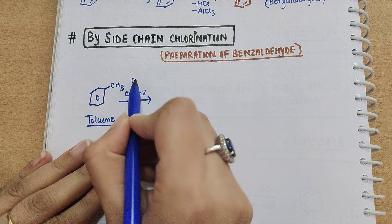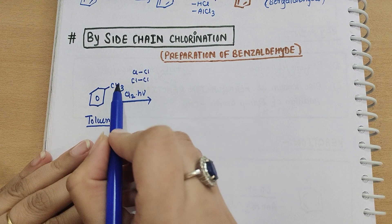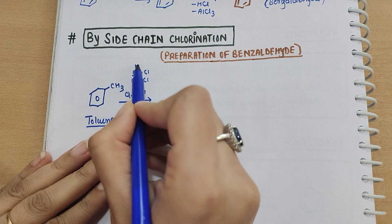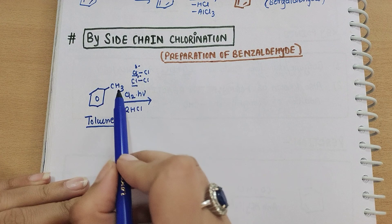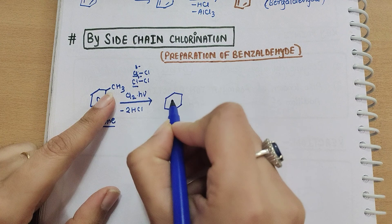Now what will happen? Chlorine is here. If we take chlorine and chlorine, what will happen if there are two hydrogens? It will attract these two hydrogens.